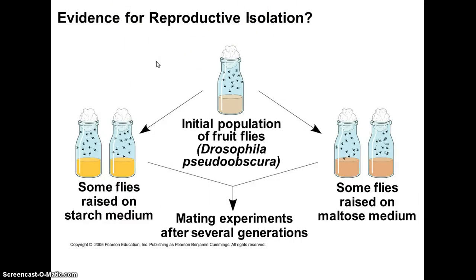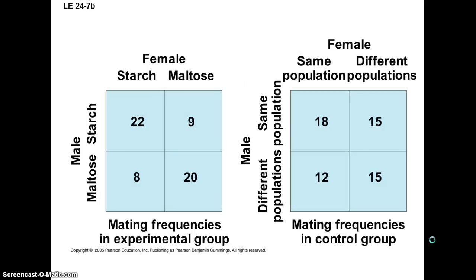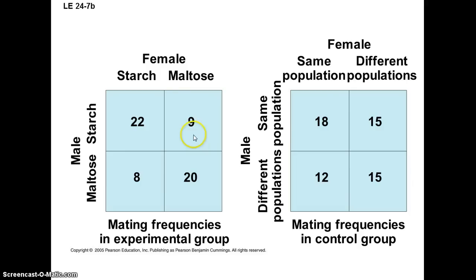Here's an interesting experiment with fruit flies, in which an initial population is split into two subpopulations. In the experimental group, they're fed different types of food for several generations, and then the flies are let back together. When populations were divided but fed the same foods, they generally recognized each other and would mate. But when fed different food, males and females that fed on starch tended to mate with each other, and males and females that fed on maltose tended to mate with each other — not as much in between. This is reproductive isolation based on a food source, and it's thought that this may be one way sympatric speciation occurs.